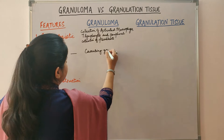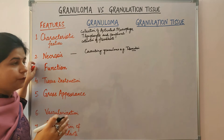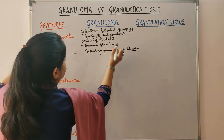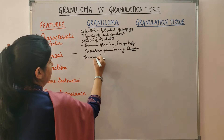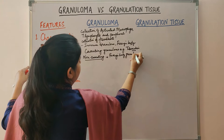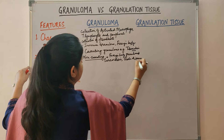These are called caseating granulomas — for example, tuberculosis. They may be associated with necrosis, and on the basis of pathogenesis, the granulomas are of two types: immune granuloma and foreign body granuloma. Examples of non-caseating granulomas include foreign body granulomas and sarcoidosis.